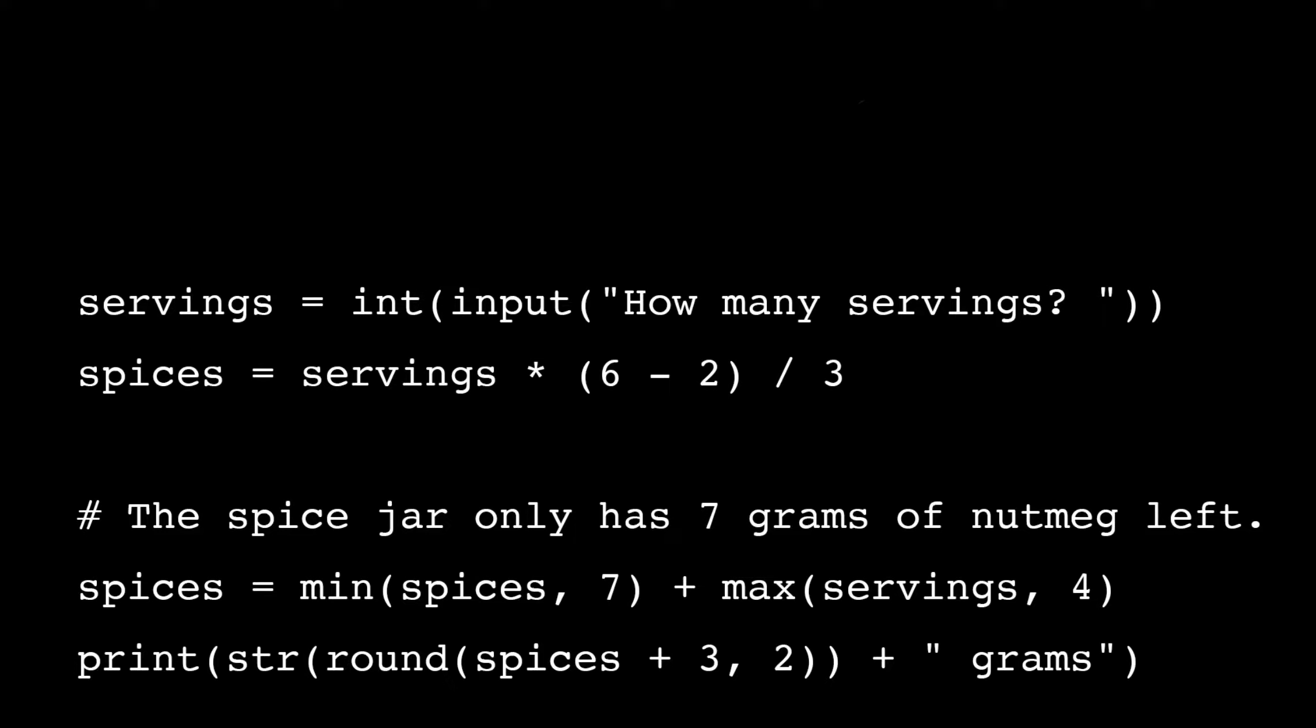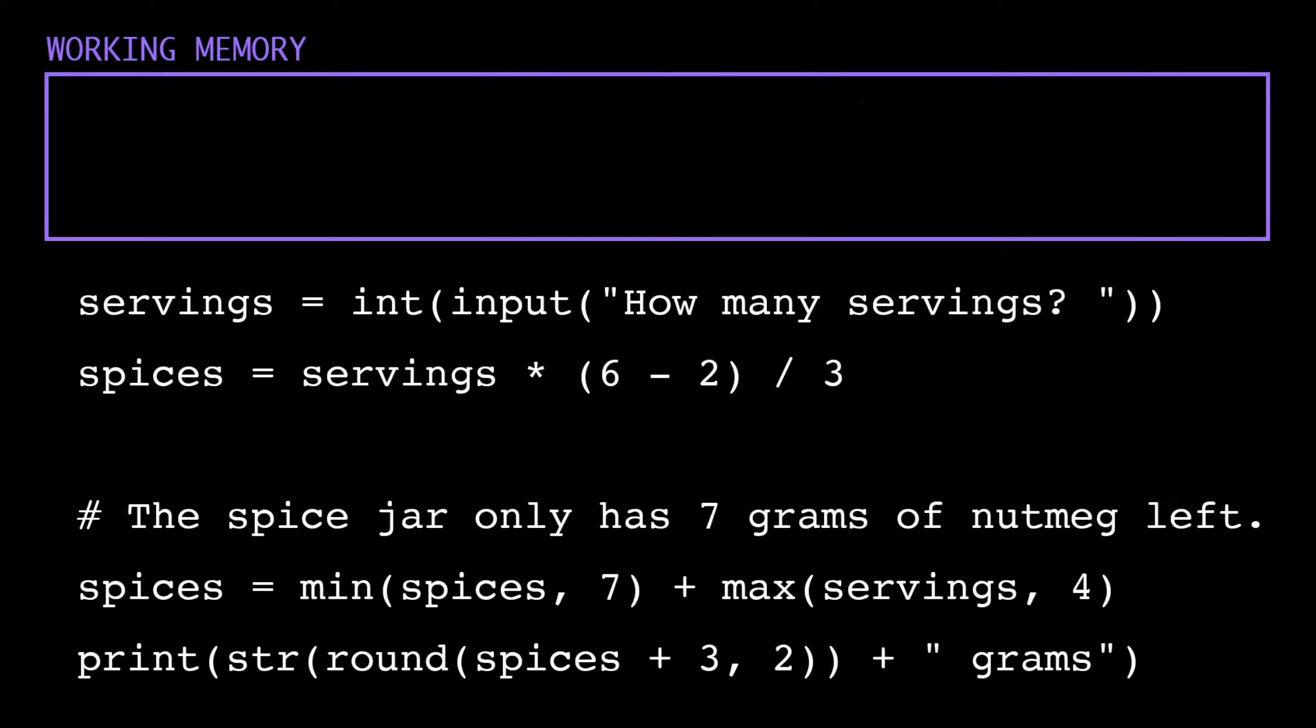How does the computer evaluate expressions with multiple operators, multiple function calls, or even nested function calls? That's a function call inside the parentheses of another function call. To examine this order of operations, let's trace a program with some complex arithmetic expressions.